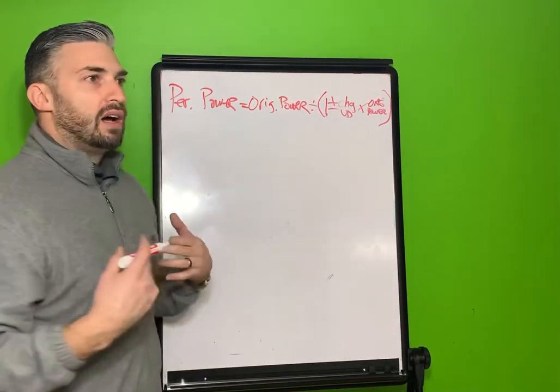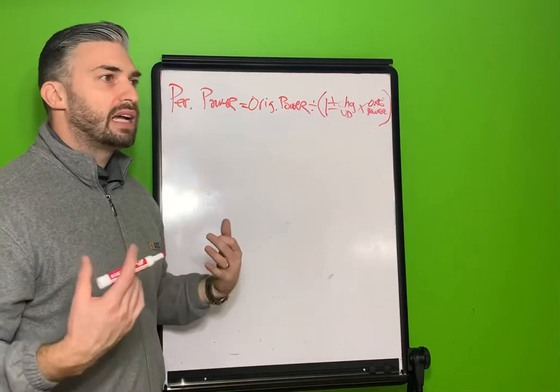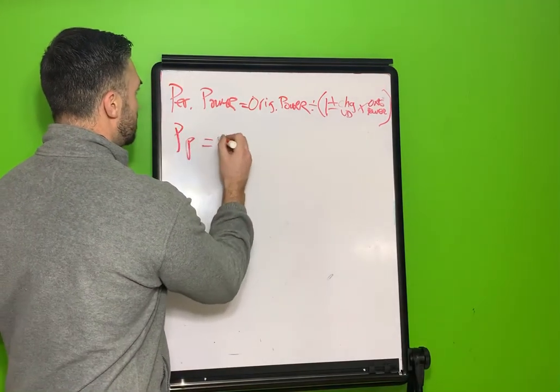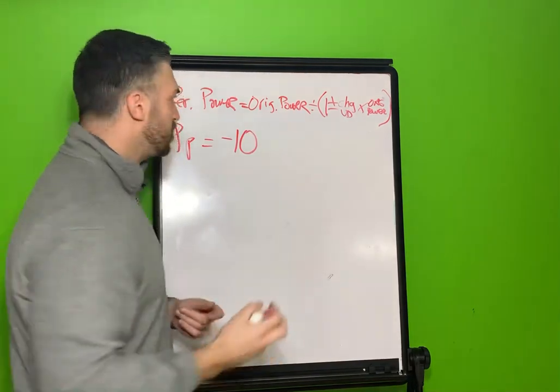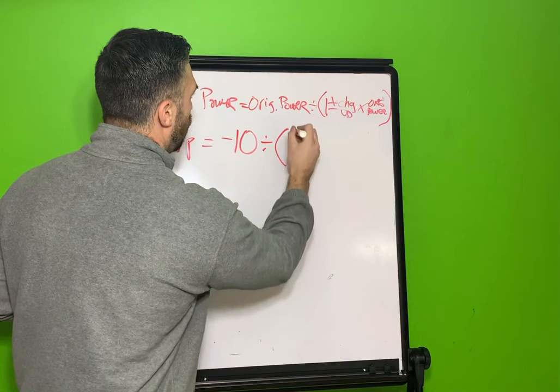But let's say that our original power is a negative 10. So perceived power equals negative 10. Let's just fill in our formula here divided by one.